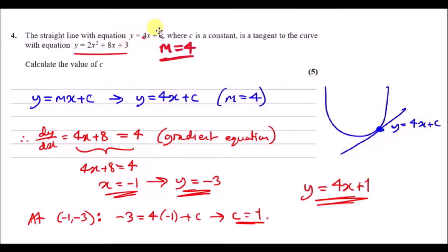First thing you must spot is that this equation here is just a straight line with a gradient of 4, and all they want you to do is find c. Because it's a tangent to the curve, it's always a good idea to try and visualize this.